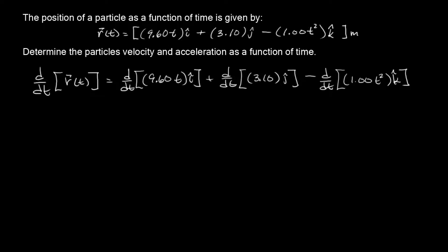Okay, so this is simple. This d dt of r of t just becomes v of t. Simple, right? And then the derivative of 9.6 t is just 9.60 i hat, right? Plus d dt of this constant here. And that's just going to give you 0 j hat. And then minus d dt of 1 t squared is just going to be 2 t k hat. Simple, right?